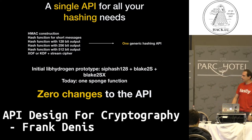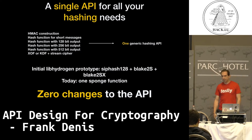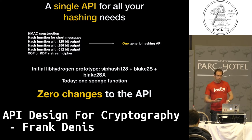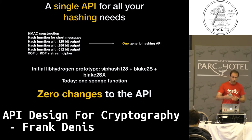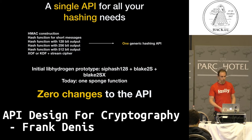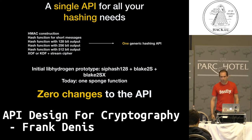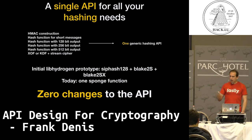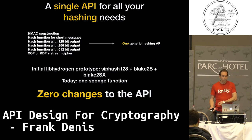For hashing, you typically choose from a bunch of different functions depending on the output size you want and whether a key is involved — which is confusing. With hydrogen, there's just one function, and under the hood it calls the right underlying function based on the output size you need. The first version of hydrogen relied on three different hash functions, but your high-level API doesn't know about that — you just have one function, provide an output size, and it picks the right one. The crypto was completely rewritten in hydrogen version 2, but the API didn't change at all.